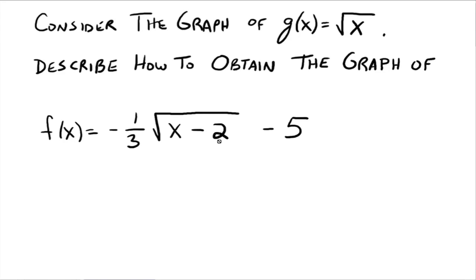So what does that mean? That's going to be a horizontal shift to the right. We've got the 1 third here, which is going to be a vertical shrink. We've got the negative sign, which is going to give us a reflection over the x-axis. And we've got this minus 5 that's going to give us a shift down.